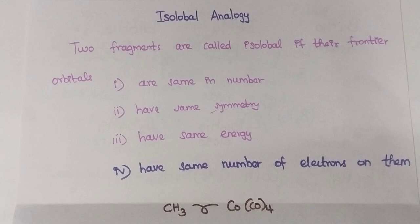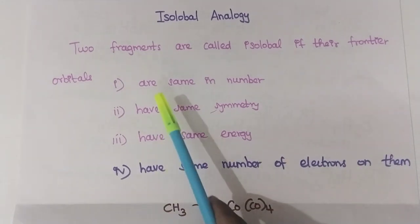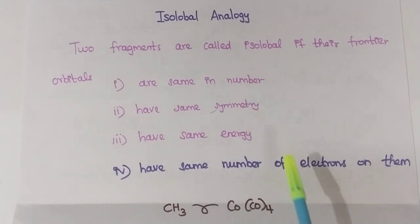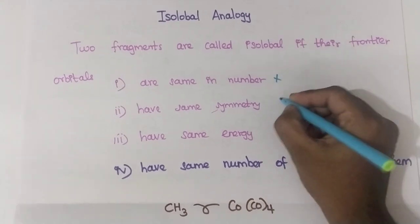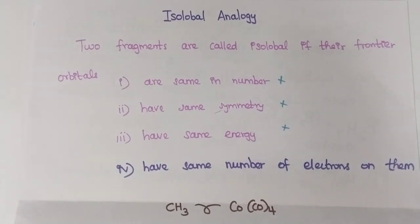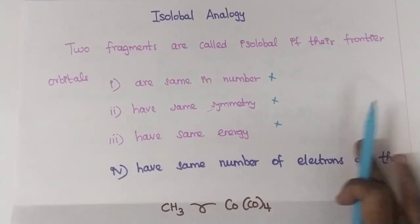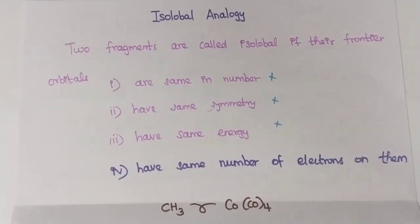We have seen frontier orbitals in pericyclic reactions. If frontier orbitals are same in number, same symmetry, same energy, and have the same number of electrons, then the fragments are called isolobal. But for solving questions, it is very easy — just count the number of electrons. You do not need to check symmetry and energy.